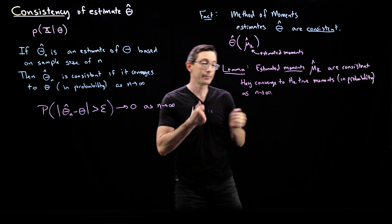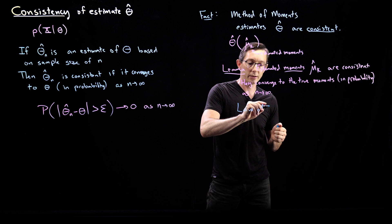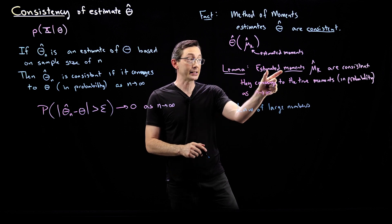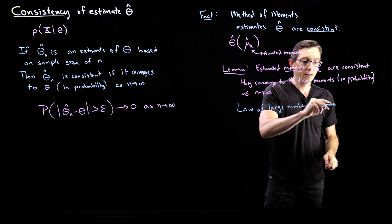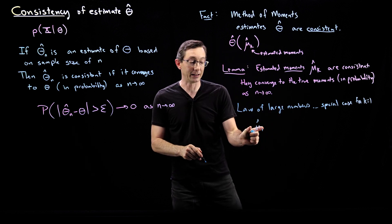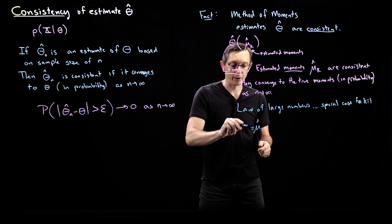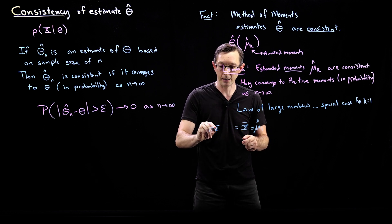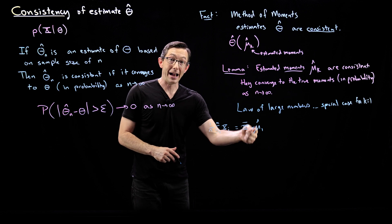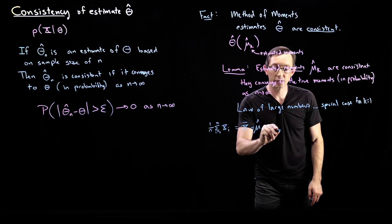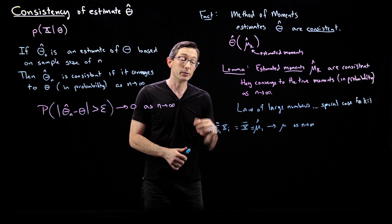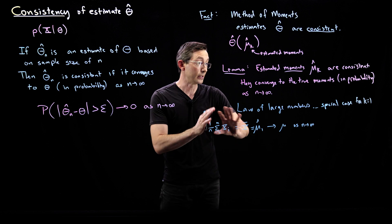You've already seen an example of this: the law of large numbers. The law of large numbers is essentially a proof — a statement of this lemma for k equals one. This is a special case for k equals one, showing that mu-hat-one, the sample mean — one over n, sum from i equals one to n of each of my random variables — converges to the true mean of your data as n goes to infinity. We've already stated and proven the law of large numbers using Markov and Chebyshev's inequalities.